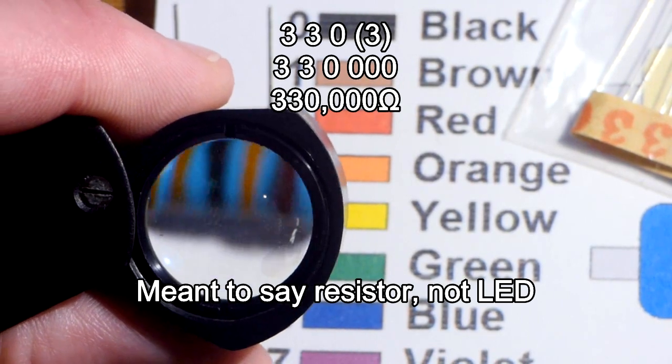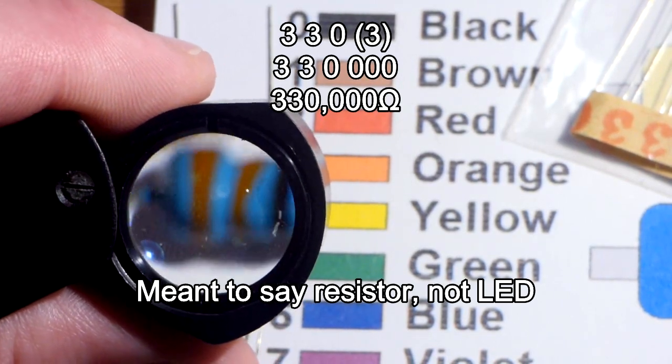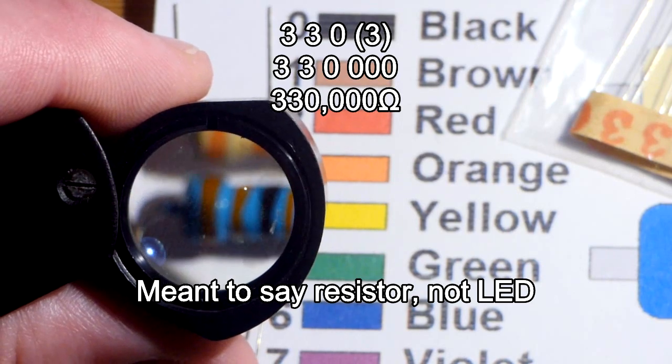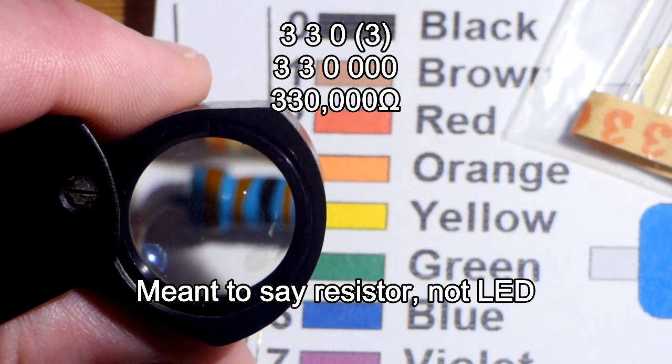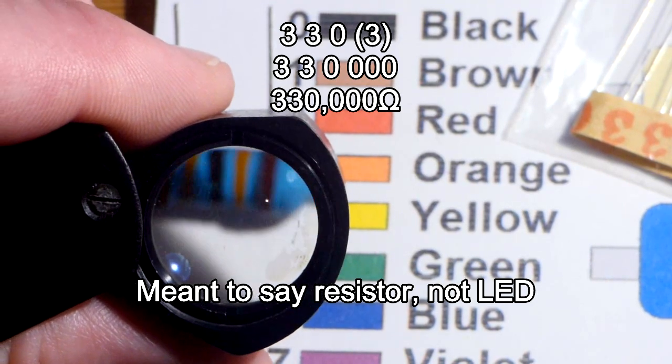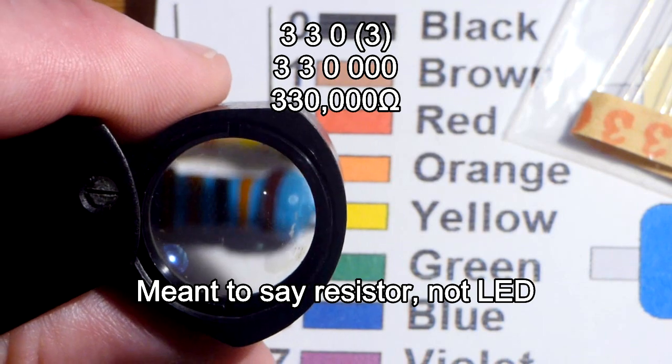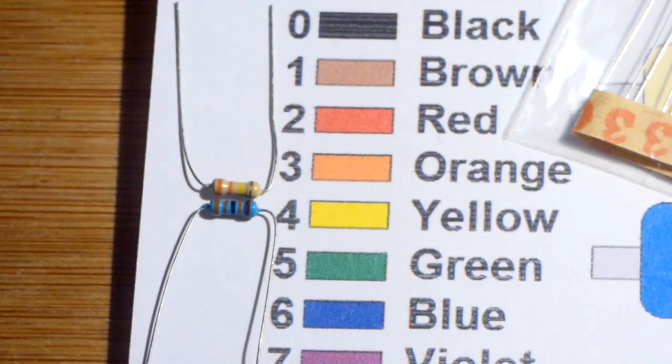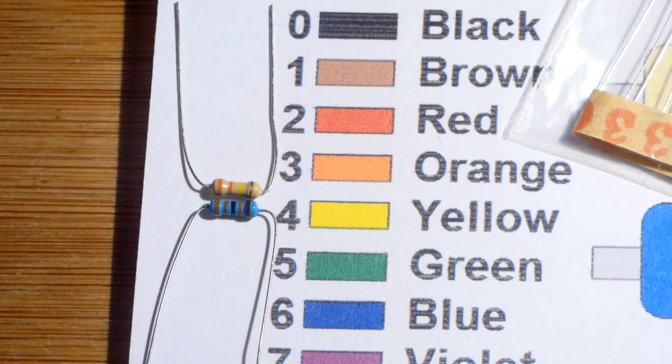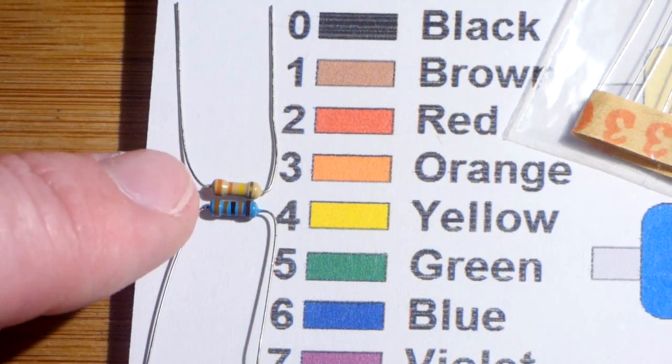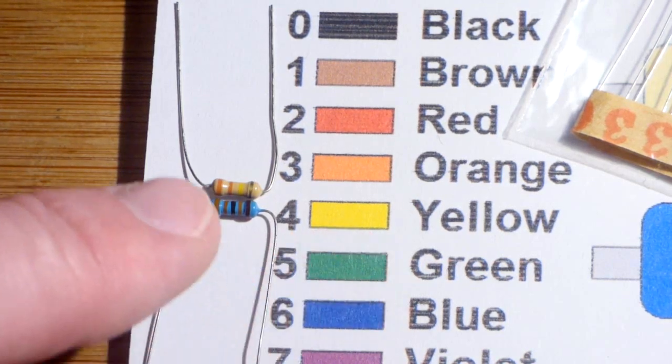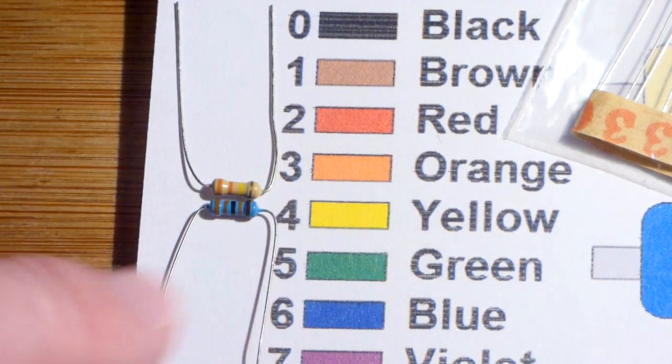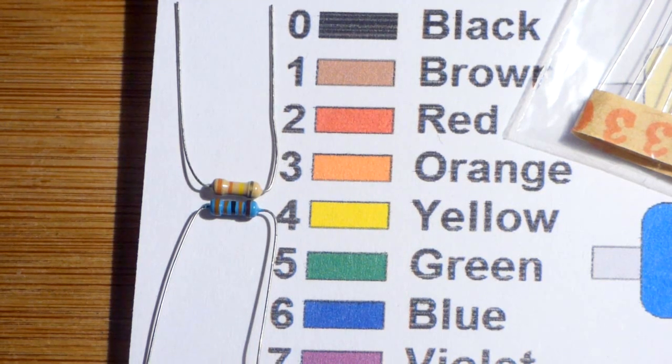The blue one, so it has five stripes. Those are orange. They don't really look orange on camera. I don't think. Hopefully, it looks better when it processes. But it's orange, orange, black. So, 3,3,0. And then orange for three more zeros. 330,000. So, when you get to the 100,000 of ohms of resistance, it will be a yellow stripe for the beige one. It will be an orange stripe for the blue one.